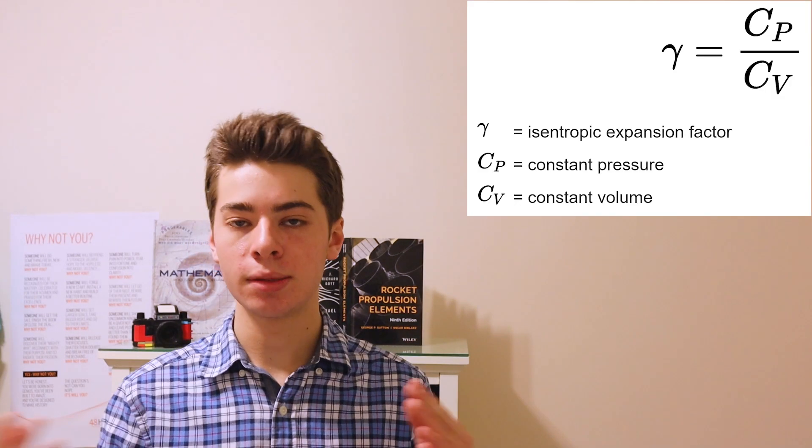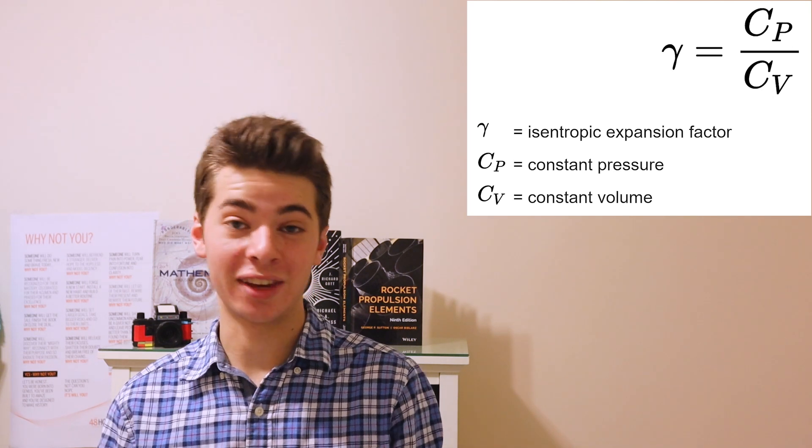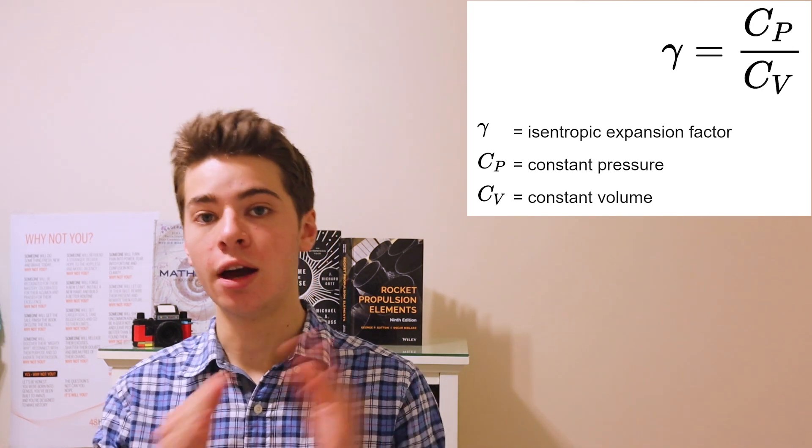Finally, you want to find the value of gamma, which is simply a value that describes the specific heat capacity of a fuel. This is very simple to find — just do a quick Google search on your fuel. For example, we were using paraffin wax, so our value of gamma was approximately 1.26. Most gases are around 1.4, but make sure you search it up and do your research.